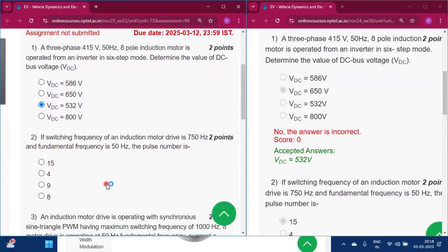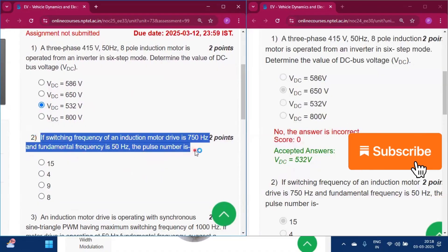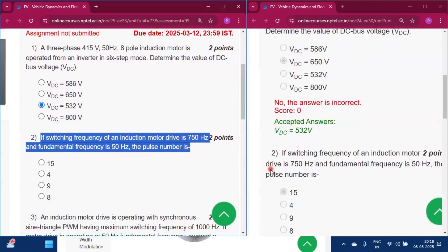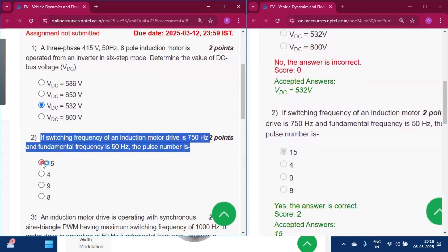Question 2: If switching frequency of an induction motor drive is 750Hz and fundamental frequency is 50Hz, the pulse number is 15, option A.